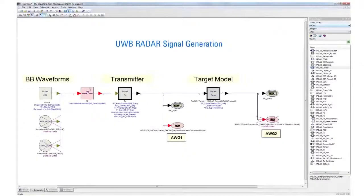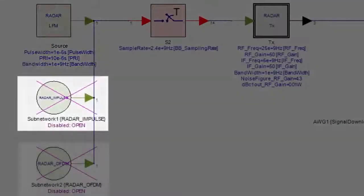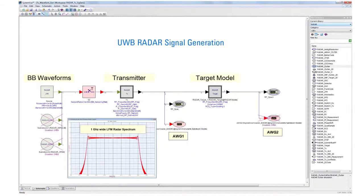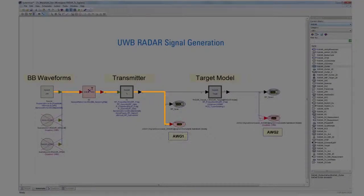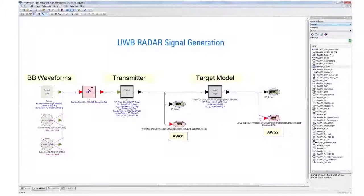In this SystemVue schematic you can see there are three UWB signal sources: LFM, impulse, and OFDM. The system is first simulated to verify the desired performance, as shown here. Then the active source signal is downloaded to the 81180A via the signal downloader AWG1, in order to generate an unimpaired UWB transmitter signal used to test the radar receiver. The signal is then sent to a radar target model where characteristics such as velocity, range, and environmental effects will be added, and downloaded to the 81180A via signal downloader AWG2.